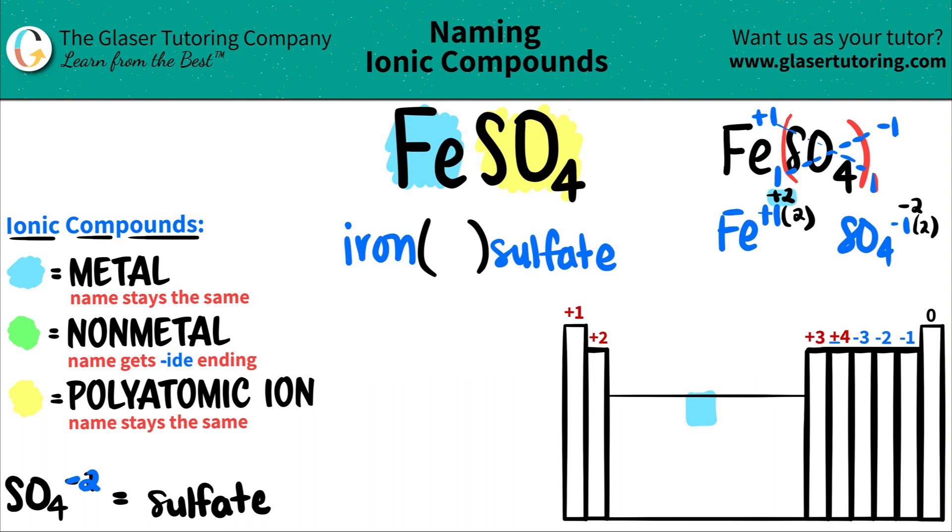That's the charge of iron, so that's the Roman numeral you're going to put in - a two, not a one. So FeSO4 is iron(II) sulfate.